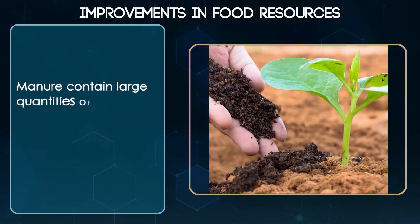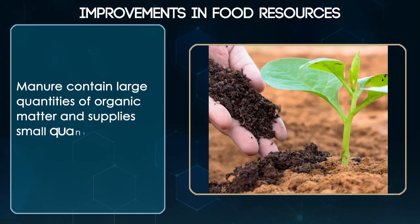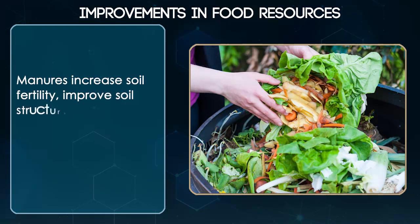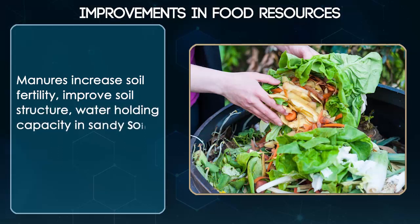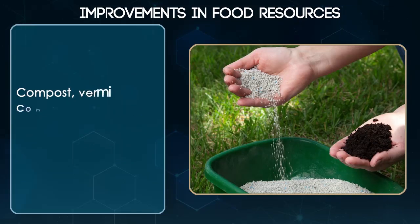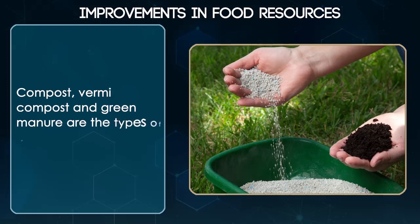Manures contain large quantities of organic matter and supply small quantities of nutrients. Manures increase soil fertility, improve soil structure, water holding capacity in sandy soil and avoid water logging in clay soils. Compost, vermicompost and green manure are the types of manures generally used.